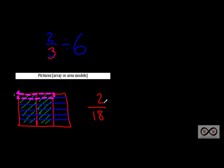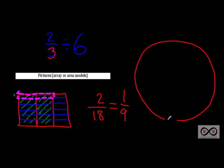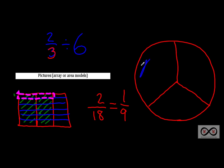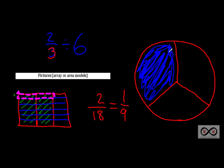Two-eighteenths — that's one way to solve it. Our mathematical model confirmed it equals one-ninth. An easier way to view one-ninth is with a circular model. Starting again: two-thirds divided by six, we divide the circle into thirds, then shade in two-thirds — that's what they had left over at the end of the day at the Pythagoras Pizza Shop.